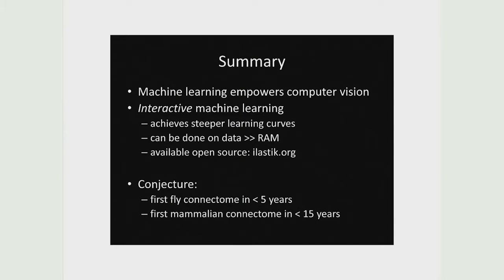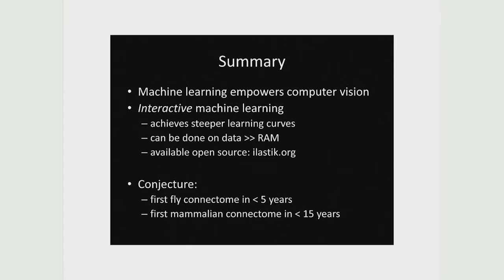In summary, machine learning is a very good match for computer vision. I like interactive machine learning because it gives us steeper learning curves, meaning we are able to obtain good predictions with fewer human inputs. We have an implementation that allows doing that on data bigger than RAM, and we're making it available open source on this website.